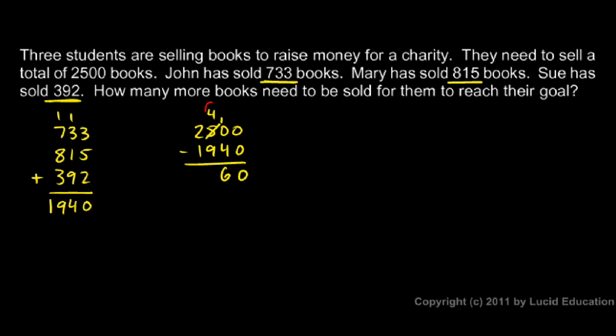And then I try to do 4 minus 9 and I can't. So I need to borrow from the 2 here. The 2 becomes a 1 and that 4 becomes a 14. So now I have 14 minus 9 which is 5.